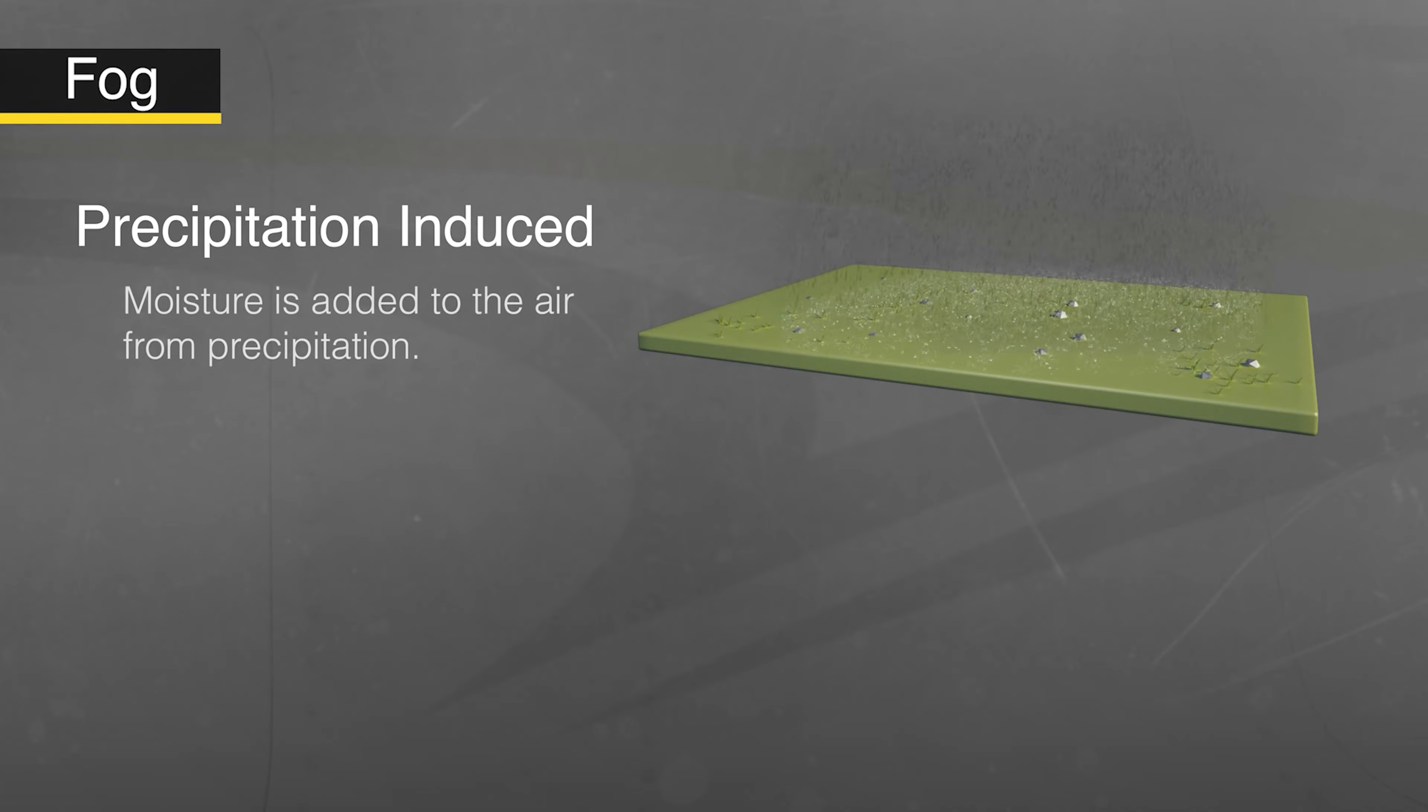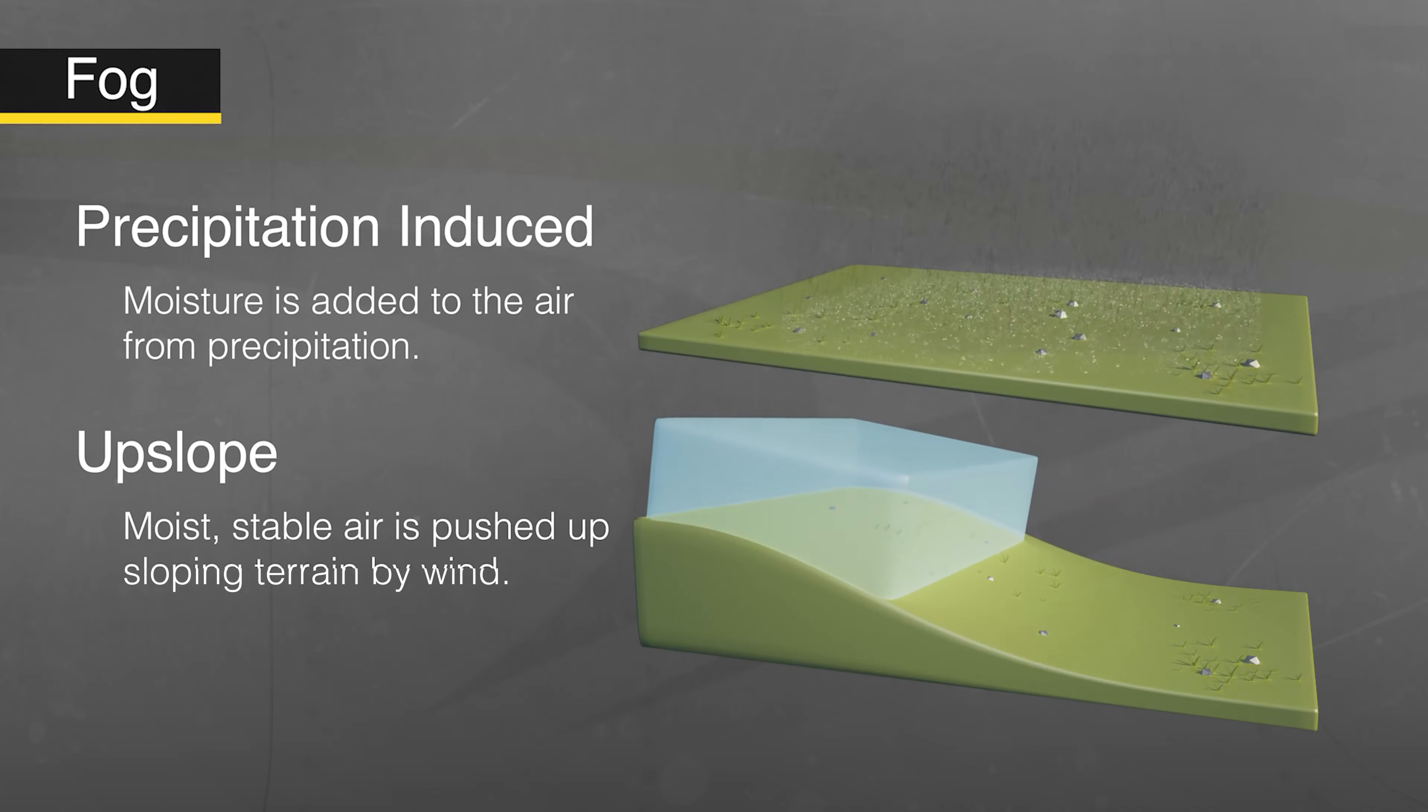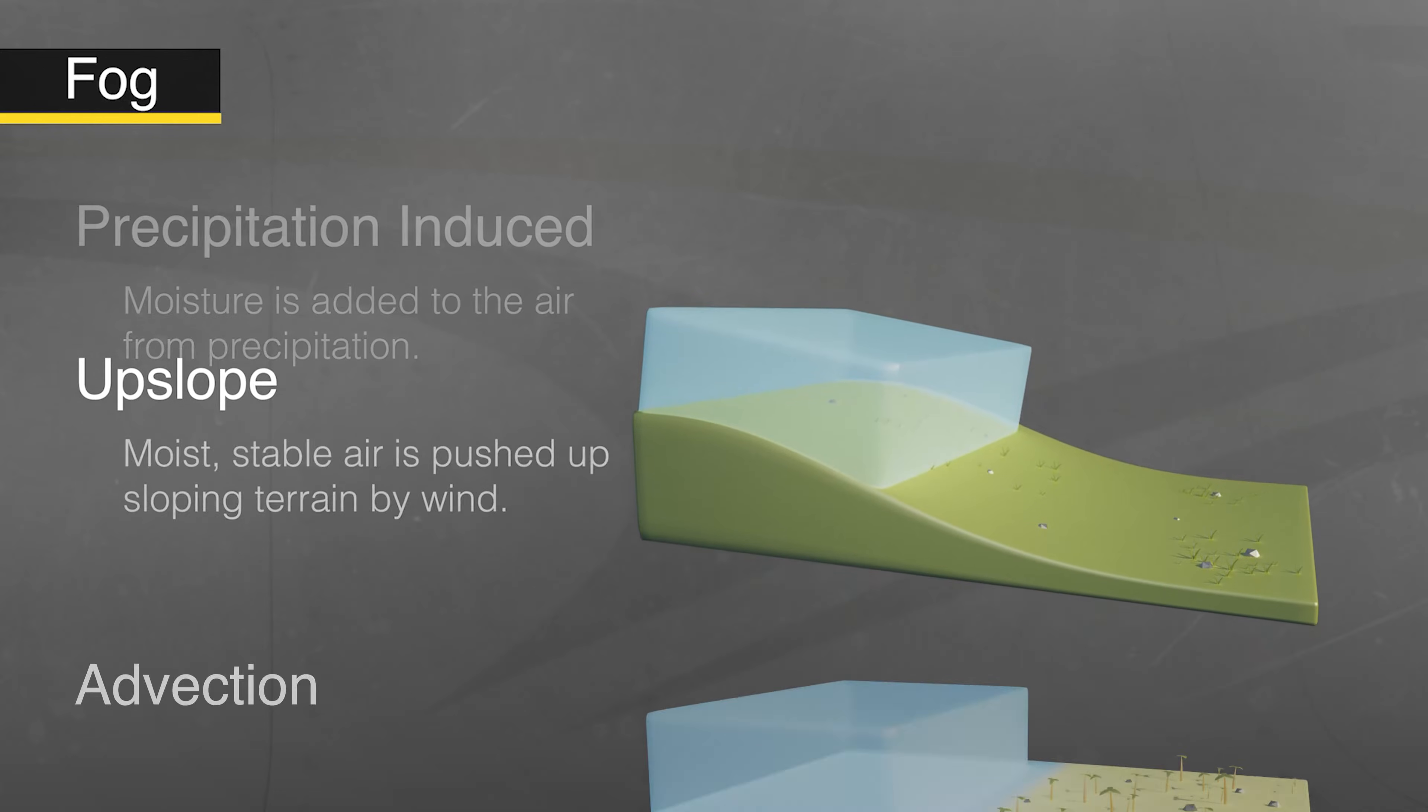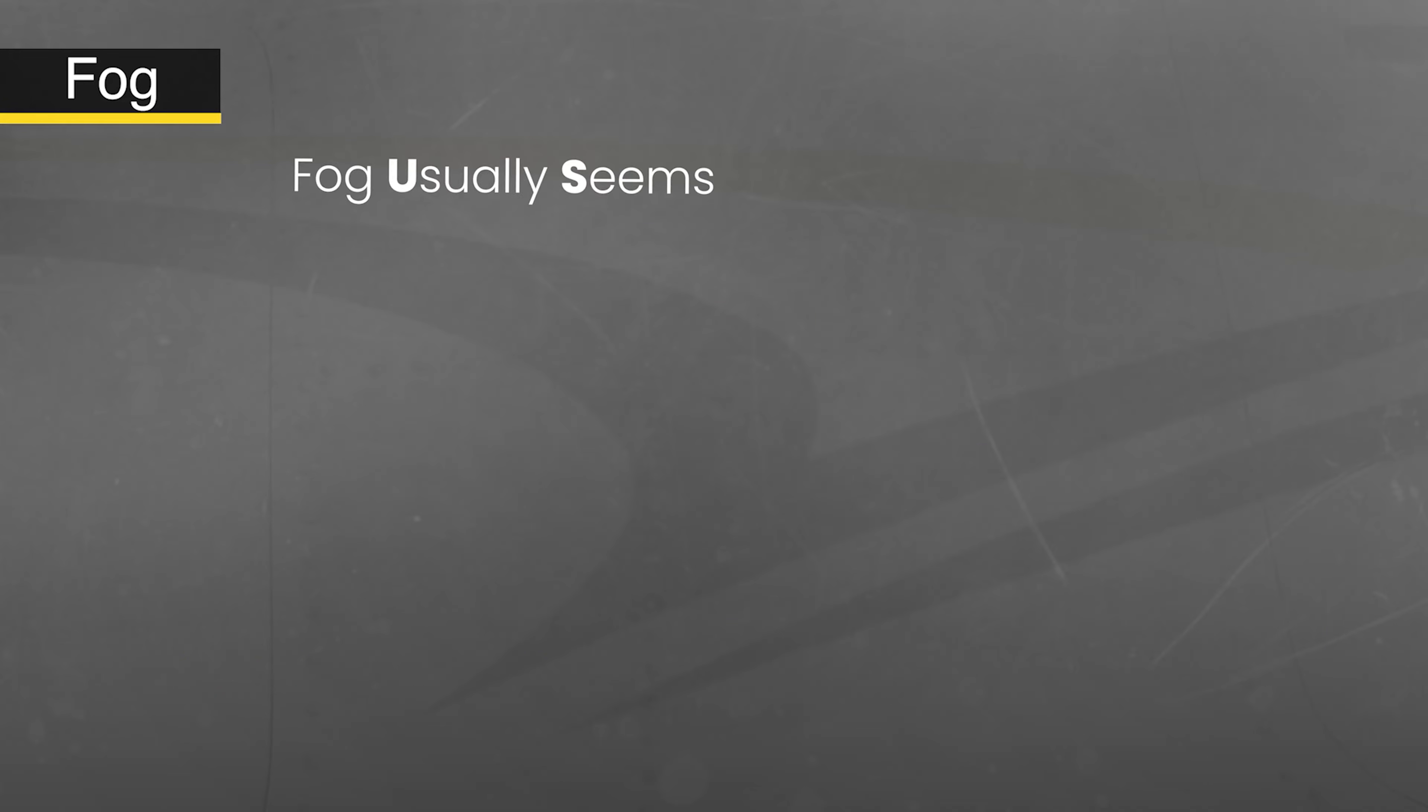The last two types of fog are pretty self-explanatory. Precipitation induced fog forms as moisture is added to the air from falling precipitation, and upslope fog forms when moist stable air is pushed up sloping terrain by wind. It is cooled to its dew point and then results in fog. Only advection and upslope fog depend on wind in order to exist. Here's a memory aid to help you remember the different types: fog usually seems present after rain. The first letters of each word stand for the five types of fog.